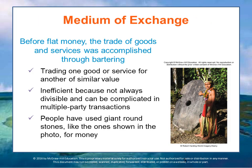So money is a medium of exchange. Before fiat money, the trade of goods and services was accomplished through bartering — trading one good or service for another of similar value. As any school-aged child knows, bartering can become quite inefficient, particularly in the case of complex three-party transactions involving peanut butter sandwiches, baseball cards, and even hair barrettes.